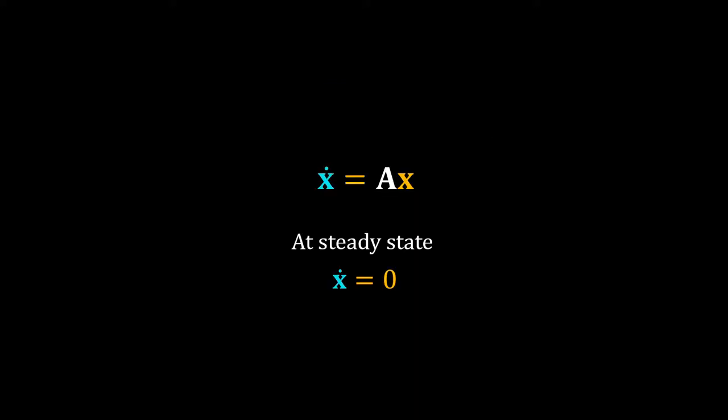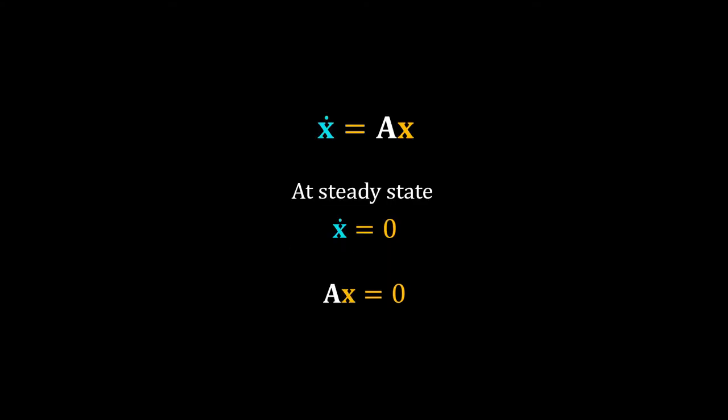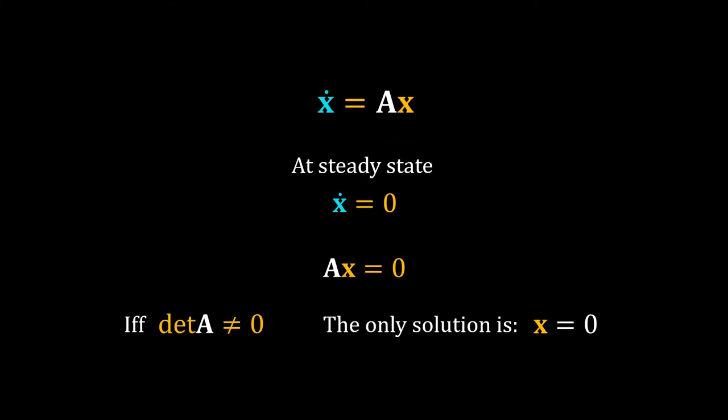First, the steady state. At steady state, all the derivatives must be zero, so x̂˙ must equal zero. Therefore, Ax is also zero. If the determinant of A is zero, then we have an infinite number of solutions, but that doesn't help. When the determinant of A is not equal to zero, we have a unique solution — that is x equal to zero. This solution is called the trivial solution.